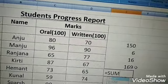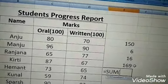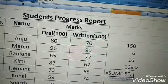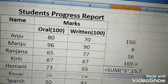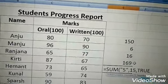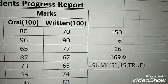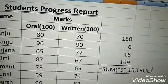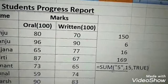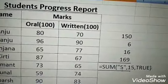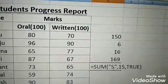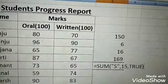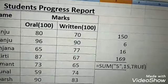The next example is =SUM("5", 15, TRUE). Here "5" is in double quotes, making it a text value. However, the SUM function converts that text value to a number, so 5+15=20, and TRUE adds 1 more, giving a result of 21.